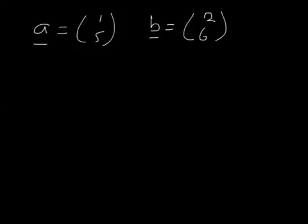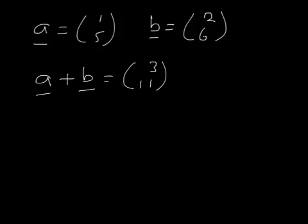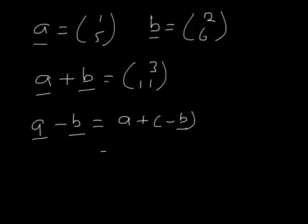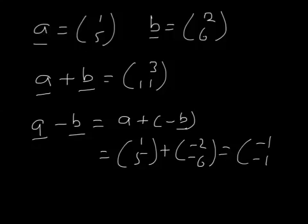Now if we've got two vectors, (1, 5) and (2, 6), we know how to add them, and we know how to subtract them, because a minus b is the same as a plus minus b, which is (1, 5) plus (-2, -6), giving (-1, -1). So that's adding and subtracting, but what about multiplying?